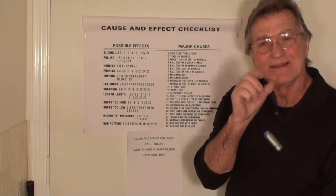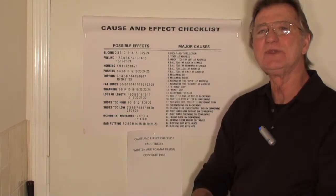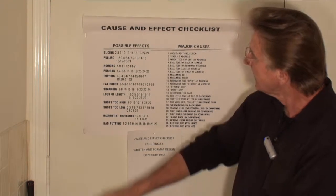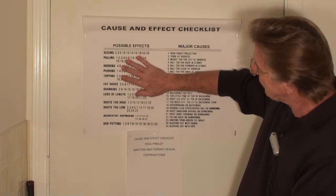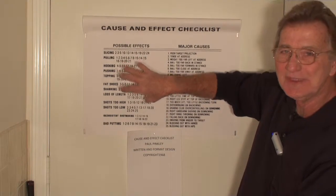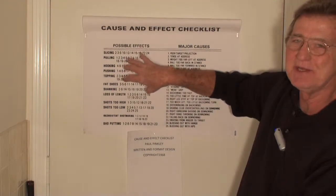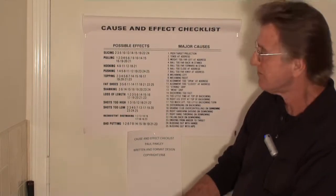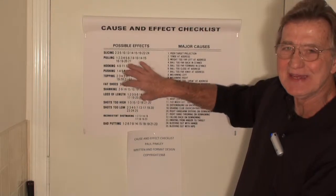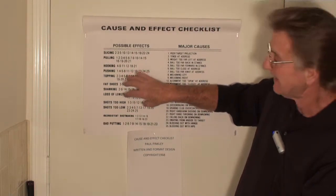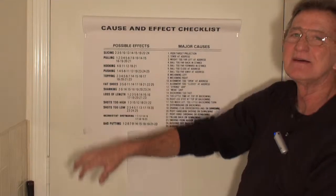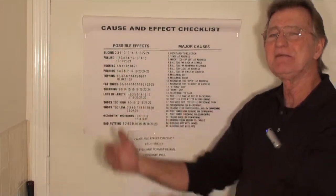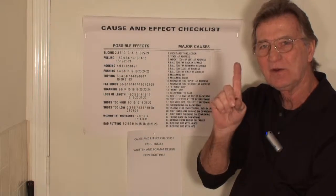But now we have the unexpected result: that being that this beautiful list here shows you that it's absolutely, literally, and factually impossible to improve your golf swing by trying to sort through and identify an array of swing faults and thus eliminate them out of your swing one at a time.